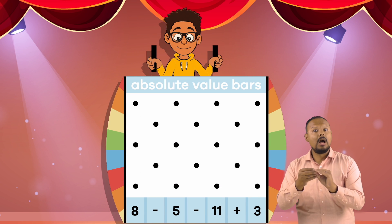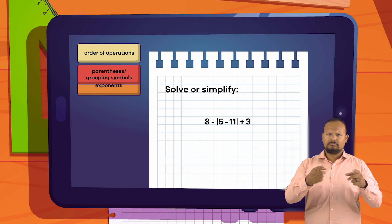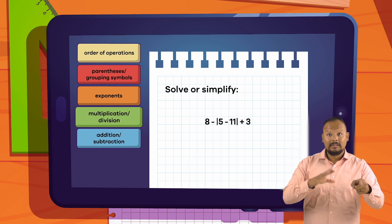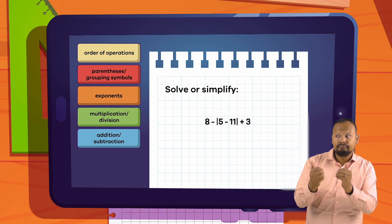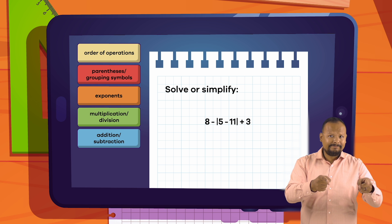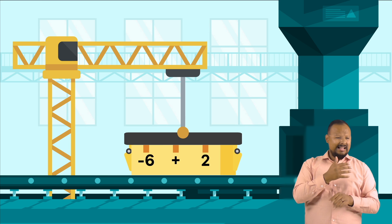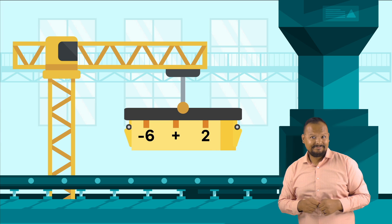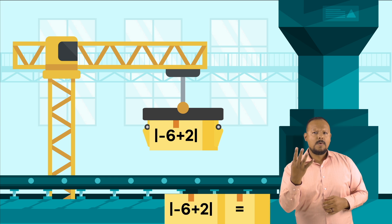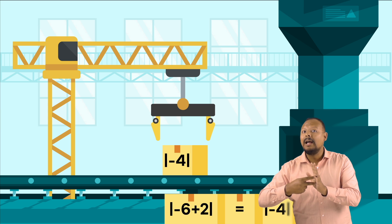Absolute value bars are a grouping symbol, just like parentheses. When using the order of operations to solve an expression or equation, absolute value is determined before any other operation, which means you always do what is inside the bars first before determining the answer. So, the absolute value of negative 6 plus 2 would be 4, because negative 6 plus 2 equals negative 4, and the absolute value of negative 4 is 4.